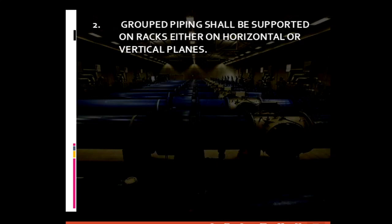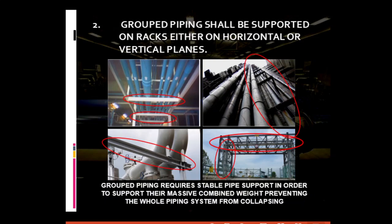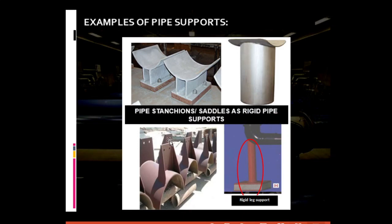For general piping requirement number two: group piping should be supported on racks either on the horizontal or vertical planes. A span of piping is heavy and is heavier when fluids pass along the pipe. Group piping results in enormous weight that, if not properly supported, would cause the entire piping system to collapse. In the picture, we can see different kinds of pipe supports, including a pipe stanchion — similar to a horse saddle — which are examples of rigid pipe supports. The lower picture shows a fabricated rigid leg support.